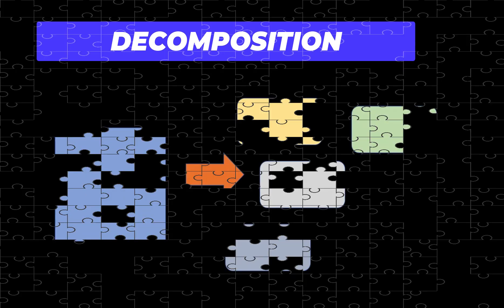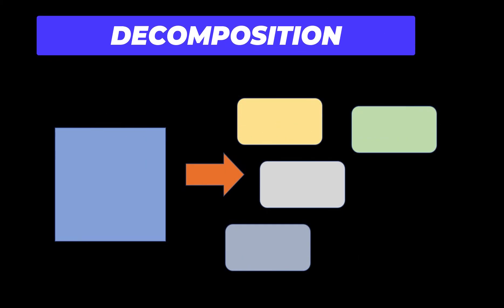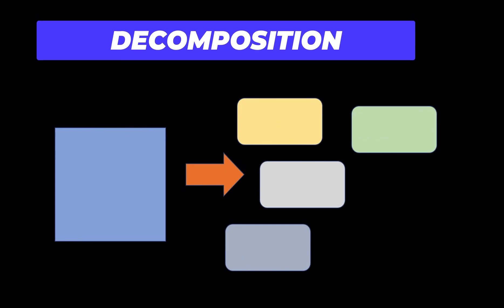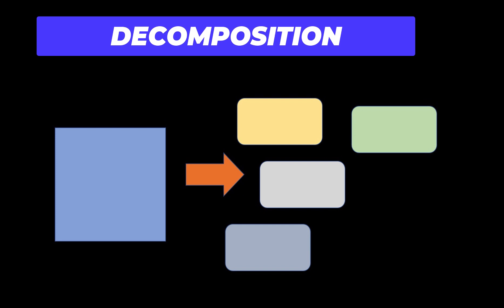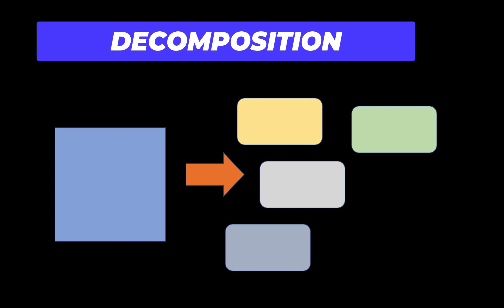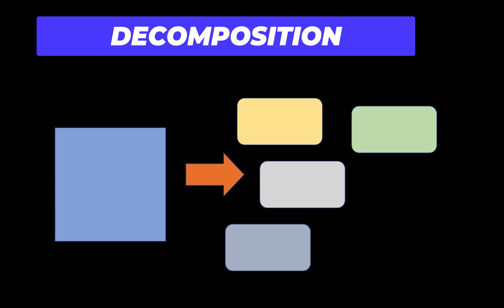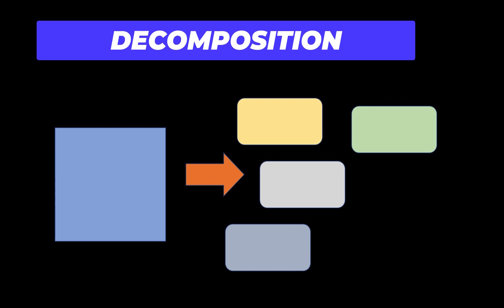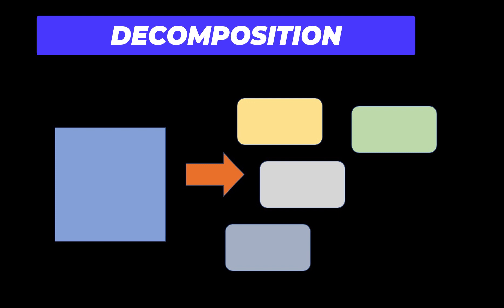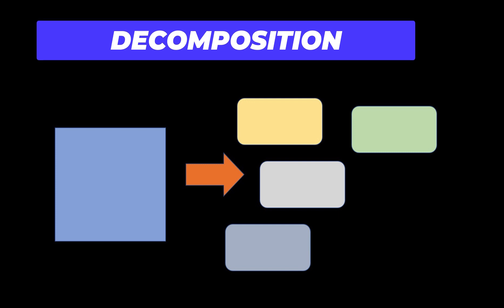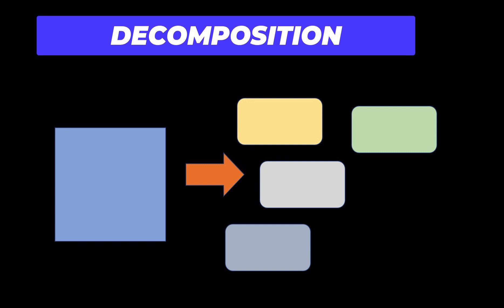Work with your team to divide big blocks of work into smaller pieces and identify manageable, smaller-sized user stories. If you already have the backlog created, then you are good to go. You can further divide these user stories into tasks and subtasks.